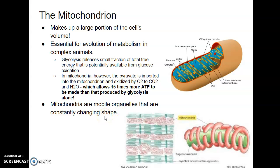Mitochondria are very mobile organelles and they're constantly changing shape. There's a common misconception that mitochondria all look like a pill-like shape or a long cylinder, but the truth is not all mitochondria look like that. Mitochondria can change shape, they can move, they can be long, they can be wrapped around, or they can be spherical. There are different orientations that mitochondria can take on, depending on the cell and whether or not they are attached to microtubules.